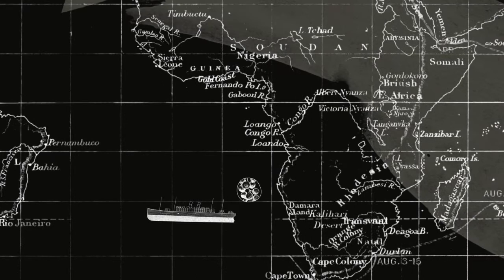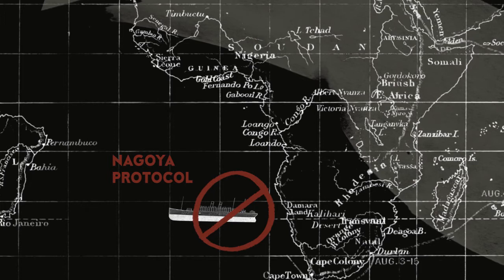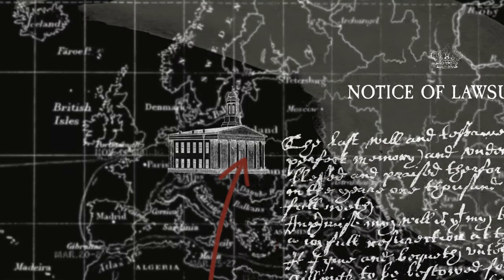Meaning if you take genetic resources from a developing country without permission, the Nagoya Protocol says this is a violation of international law. So what it means is I will be able to go directly into the courts of your country and sue, file a complaint.